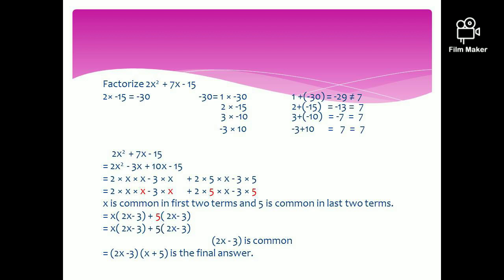Following the same steps: x is common from the first two terms and 5 is common from the next two. This gives x times 2x minus 3 plus 5 times 2x minus 3. As mentioned, if done correctly you get the same bracket. Therefore, 2x minus 3 is common, and the final answer is 2x minus 3 times x plus 5.